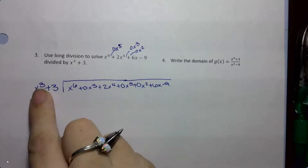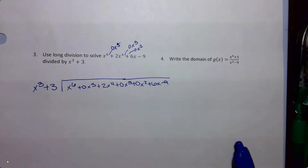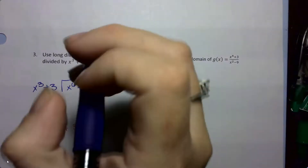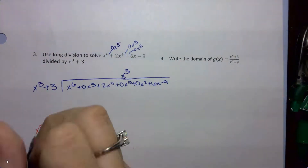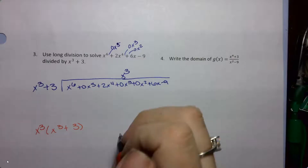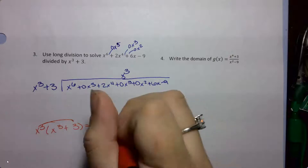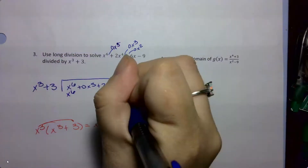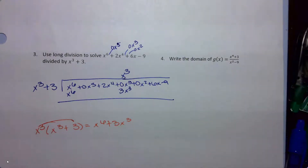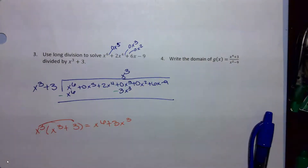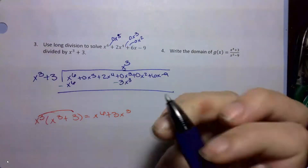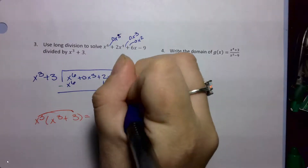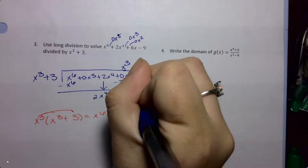I want to turn this x cubed into an x to the 6th — I need to multiply by another x cubed. So I'm going to write x cubed up here. Then I distribute down below: x cubed times x cubed gives me x to the 6th, and x cubed times 3 gives me 3x cubed. I line those up — x to the 6th and then 3x cubed. Then I change my signs and subtract: the x to the 6th cancels out, I have 0x to the 5th, and I bring down 2x to the 4th. I have negative 3x cubed.